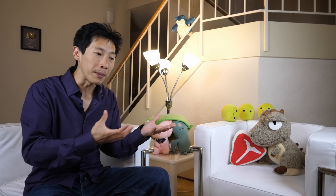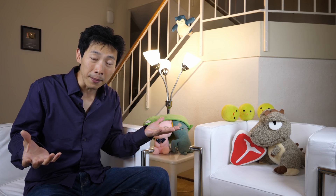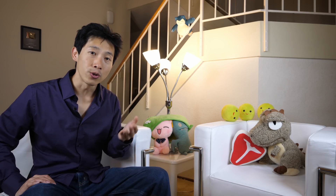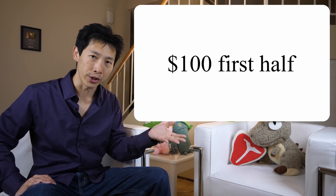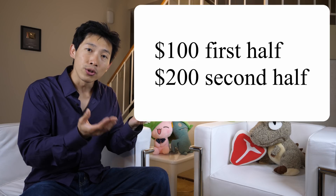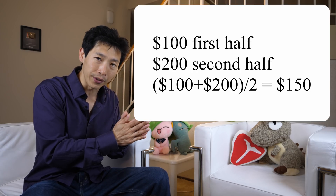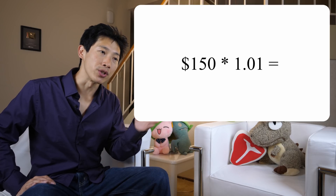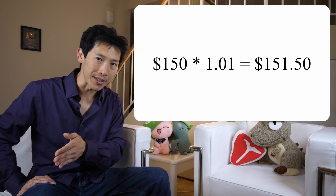Your credit card bill is not going to be as simple as this. Sometimes you might be spending more throughout the month and maybe making a few payments too. In the end, it's going to be the average balance across that billing period that they factor in to calculate your interest. So let's say half of the month you owe them $100, and the second half you spend another $100 and owe them $200. The average balance would be $150 for that whole month, and then you multiply that by 1.01, which gives $151.50.